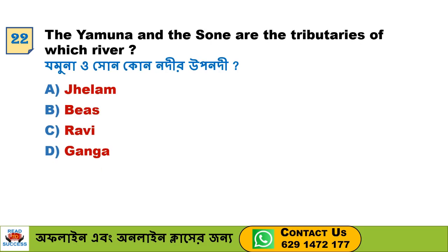Next question: The Yamuna and the Son are the tributaries of which river? Option A. Jhelum, Option B. Beas, Option C. Ravi, Option D. Ganga. Option D, Ganga, is the correct answer.